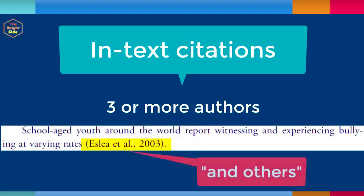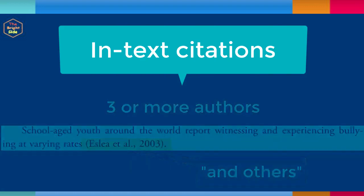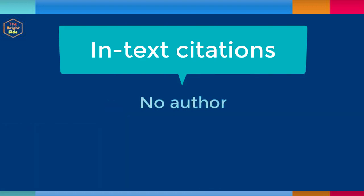"Et al." is a Latin phrase that means "and others," and it replaces the other authors' names. Pay attention to where the period and comma go for this. Use "et al." every time you cite a source with three or more authors, even in the first in-text citation.